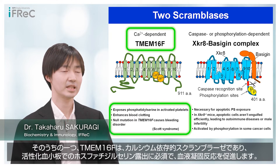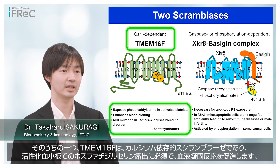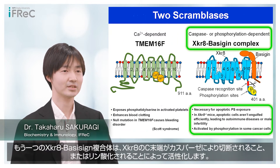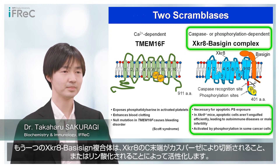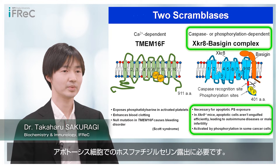One is TMEM16F, which is a calcium-dependent scramblase necessary for phosphatidylserine exposure in activated platelets and enhances blood clotting. The other is the XKR complex, which is activated by caspase-mediated cleavage or phosphorylation of the XKR C-terminus. It supports phosphatidylserine exposure in apoptotic cells.